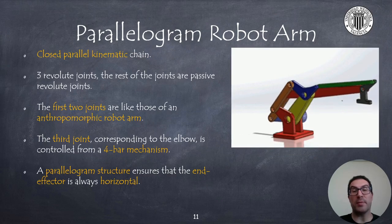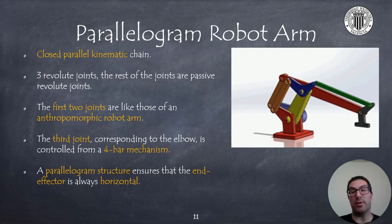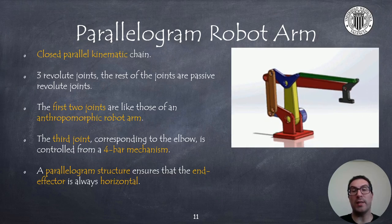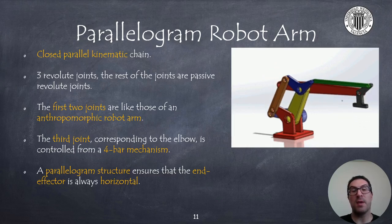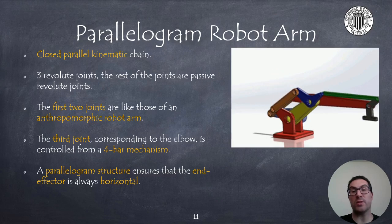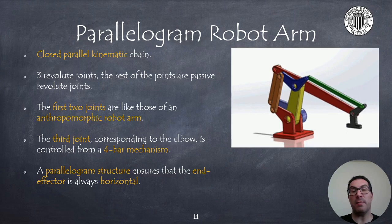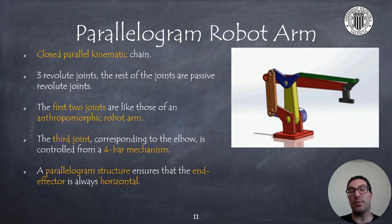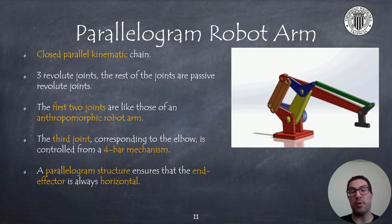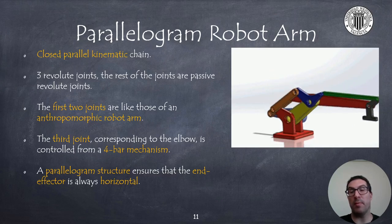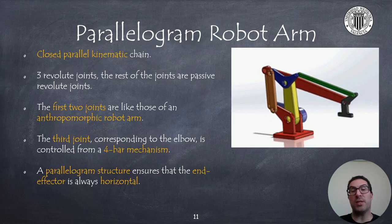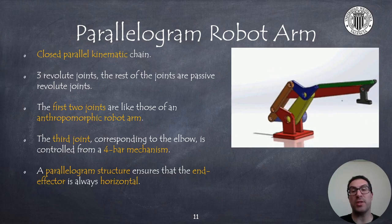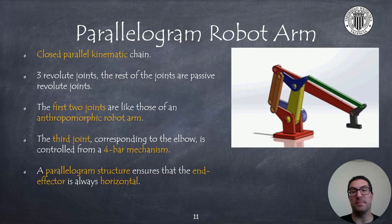The parallelogram robot arm structure is a parallel robot. It has three revolute joints while the rest of joints are passive revolute joints. The first two joints are just like the ones found in the anthropomorphic arm. The joint that allows you to point towards a specific direction is like the waist of a human being. The third joint is controlled by a four-bar mechanism, while the end effector is part of a parallelogram structure that ensures that it is always horizontal, as you can see.